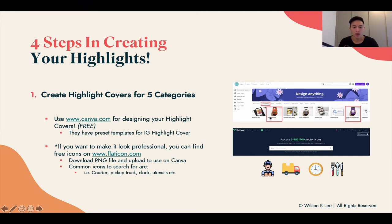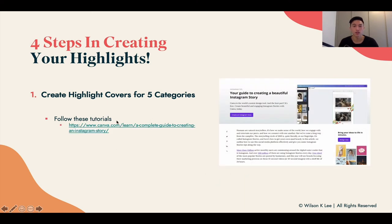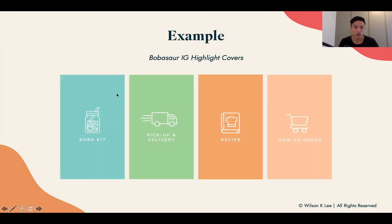Some common icons to search for include courier, pickup truck, clock, utensils, and so on. Be creative with this process. There's a tutorial link included with more detail on how to create highlight covers for your five categories — I've included extra resources in case this lesson moves too fast. As an example, here are the highlight covers we created for the case study: Bulbasaur, Bulba kit, pickup and delivery, recipe, and how to order.